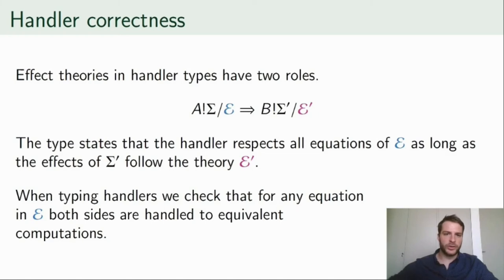Since two computation types are involved, equations occur in two spots. The E on the left says the requirements for the implementation, and E' on the right states the theory of the outgoing type.